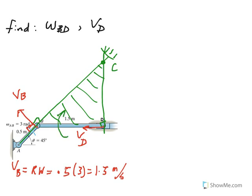You can think of link BD as a triangular plate, and at this instant it's rotating about the axis through C — clearly clockwise with some omega BD, which we are trying to determine. Since this angle here is 45 degrees, triangle BDC is an isosceles triangle. So if BD is 1.5, the rise is 1.5 and the run is 1.5, making the hypotenuse about 2.12 — the square root of 1.5 squared plus 1.5 squared.